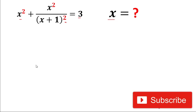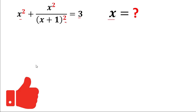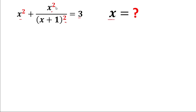If you have not subscribed to my channel, please do subscribe and give a thumbs up to the video. Now, if you look here, in the numerator it is x² and the denominator is also squared, so we can write it in one bracket: x² + (x/(x+1))² = 3.